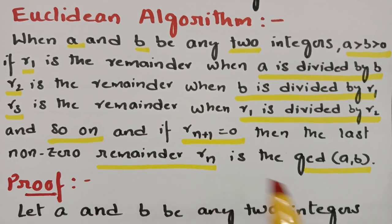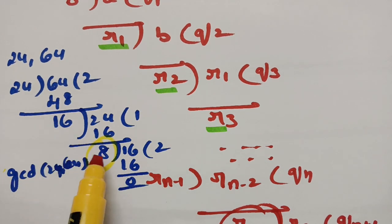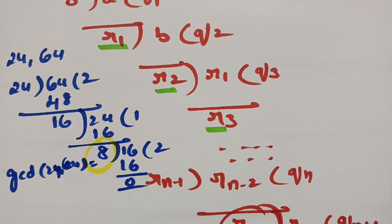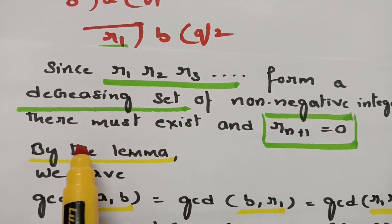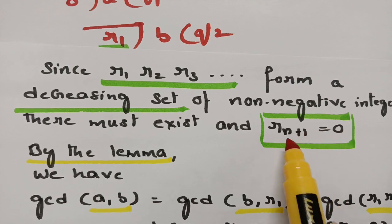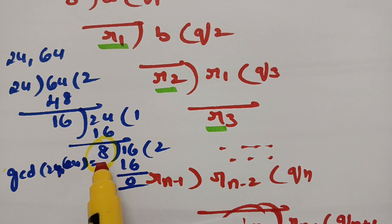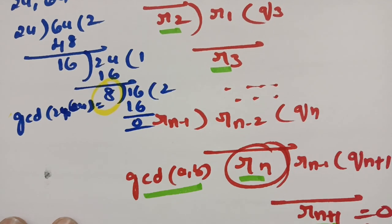The statement is very clear. In the example with 24 and 64: R1 = 16, R2 = 8, and R3 = 0 — these are all decreasing remainders. Since R1, R2, R3 form a decreasing set of non-negative integers, there exists a last Rn+1 = 0, and the last non-zero remainder is the GCD of A and B, which is 8.